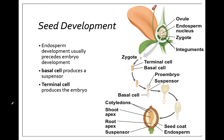Once fertilization has begun, the zygote and the endosperm can develop into an actual seed. The first thing that happens is the zygote divides into two cells. The first cell is the terminal cell, which becomes the embryo, and the basal cell becomes the suspensor — the part that attaches the embryo to the seed and allows for transporting nutrients to the embryo.